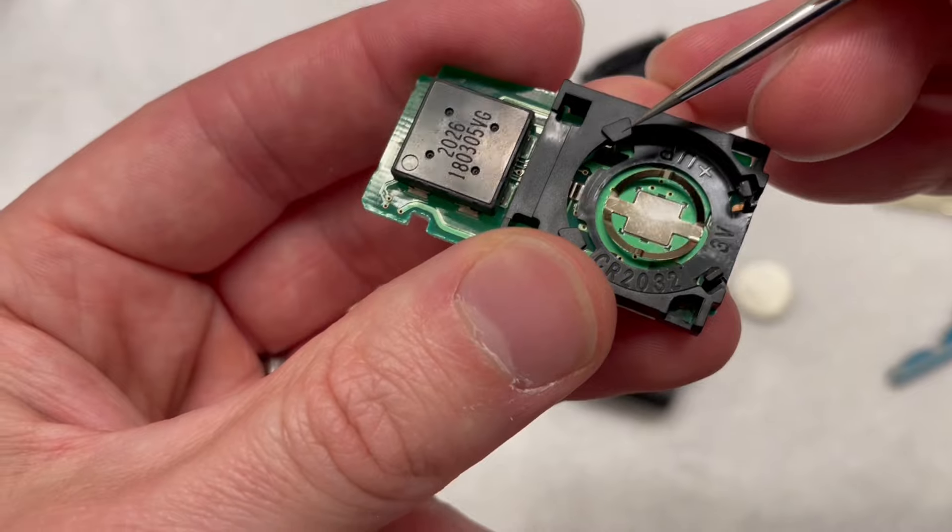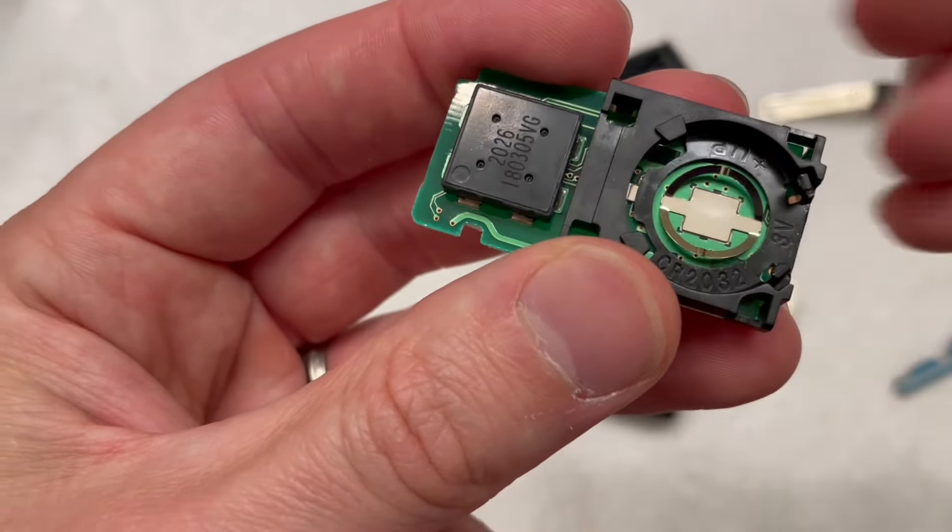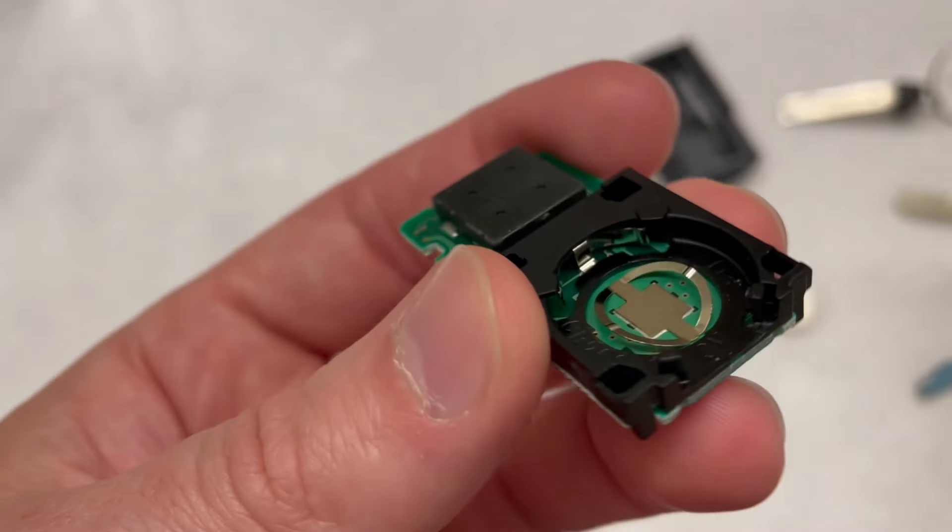See these two plastic tabs here? On some battery compartments, you try to force in the battery and it forces these to split in half and bend down. When that happens, it's going to cover this half-circle contact area here.